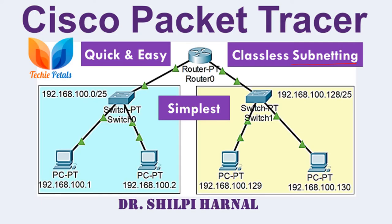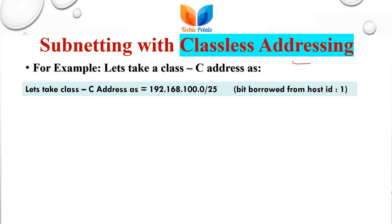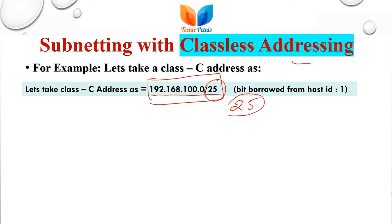Let's start the video. We are taking the example of Class C addressing. We have taken one Class C address, but this time we are taking the number of network ID bits as 25. So 25 bits for Class C addressing means we have used one bit from the host ID to configure the subnets.